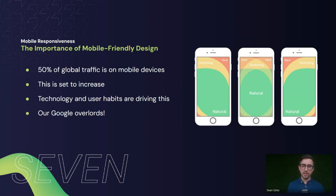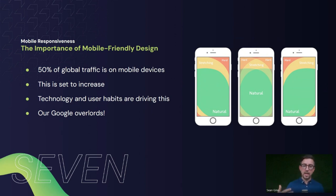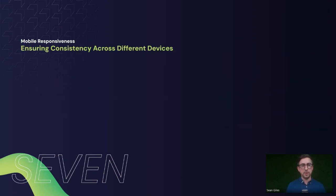One big thing that happened over the last year is that Google moved to a mobile-first index platform. They used to crawl your desktop website to get all the content, understand it, and give SEO scores — now they go to the mobile website. So you want to make sure the mobile site is designed well, performs at high speed, and is well laid out.